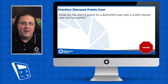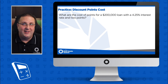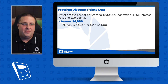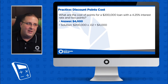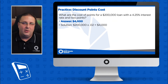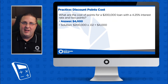Alright, what did you get? Did I trick you again? Did you get $4,000? If you did, great job. Here's the math: $200,000, two points equals two percent, so $200,000 times 0.02 equals $4,000. That's the answer.